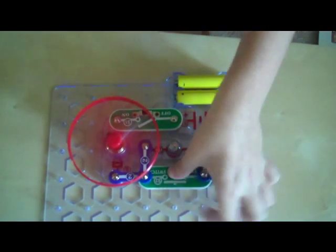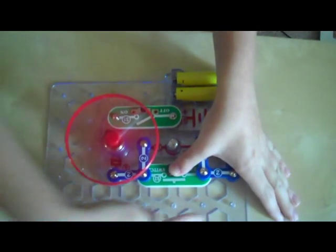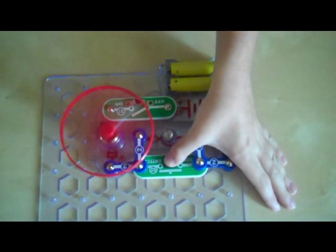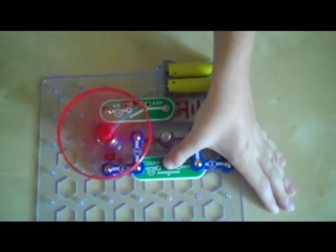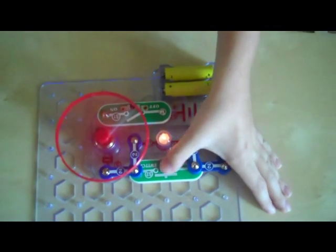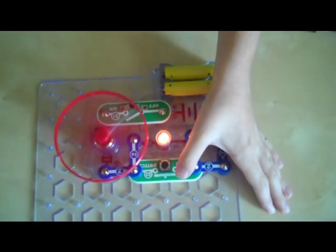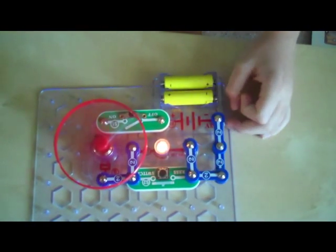This is because the electricity flows this way only. After you stop pressing the button, the light turns on and the motor spins slowly again.